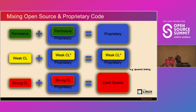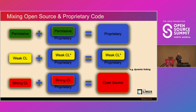Here's a graphic example of how license mixing works. Combining permissive with proprietary code: you're allowed to relicense and distribute that as a proprietary license. Mixing weak copyleft with proprietary code: your proprietary code can remain proprietary, typically as long as you're not violating the license terms — for example, if it's LGPL and you're using it as a dynamically linked library, the proprietary code remains proprietary. With strong copyleft, however, what you get out the other side must be open source.